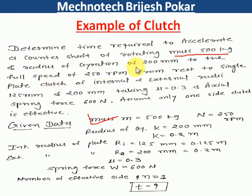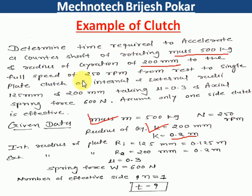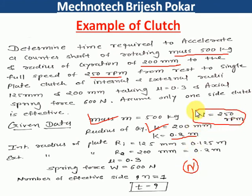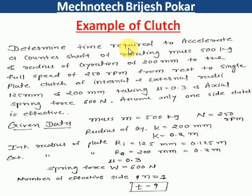The radius of gyration of this shaft is 200 mm, which we convert to 0.2 meters. The shaft needs to reach a full speed of 250 rpm. The initial speed of the shaft is zero, so we have to find the time required to go from 0 rpm to 250 rpm.